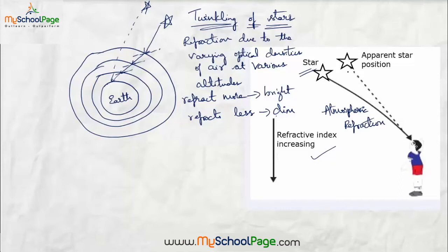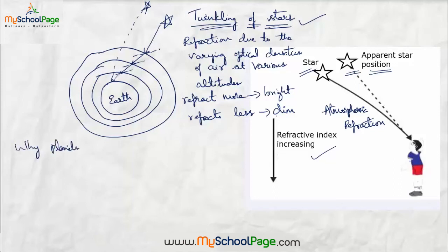The boy can actually see the star at this apparent position. The atmosphere is continuously changing, due to which the optical densities of air at different levels keep on changing. This is why we see the twinkling of stars. Now let's also understand why planets do not twinkle.